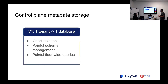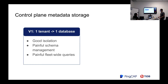We still need metadata storage for the control plane — like project-cluster mapping and user relations. Previously, we used one database per tenant, which provides very good isolation — each tenant has its own database, very convenient. But later we found it's really painful to manage schemas. When you have tens or hundreds of schemas, and sometimes you want to query across multiple tenants — like listing all clusters across the fleet — this architecture makes things really painful.